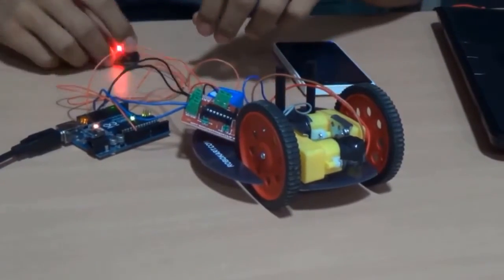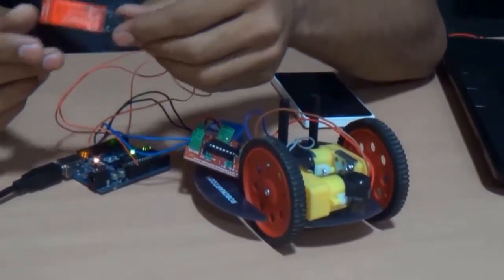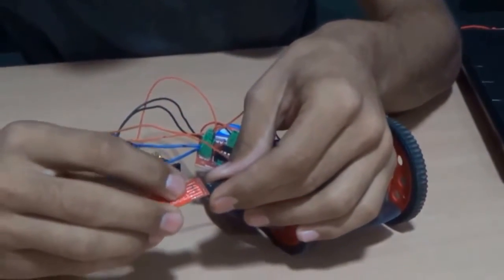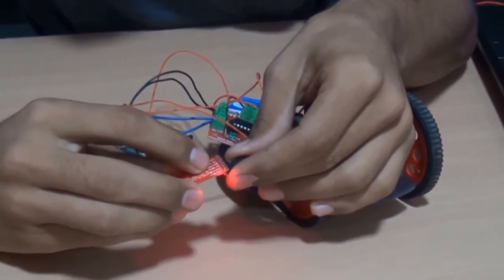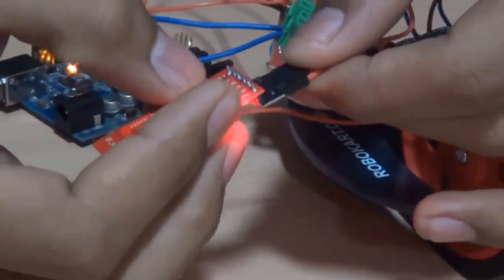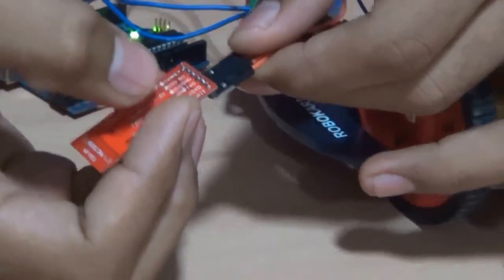And then the next one is this Bluetooth module and this Bluetooth module is HC05. It is having four ports: ground, TXD, RXD and 5 voltage and key. So we are using only four ports: 5 volt, ground and TXD and RXD.